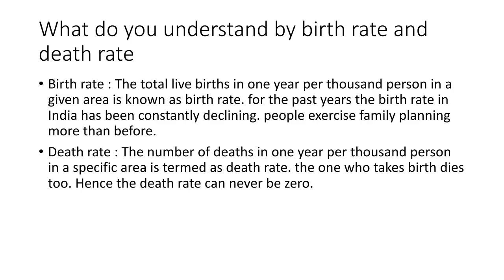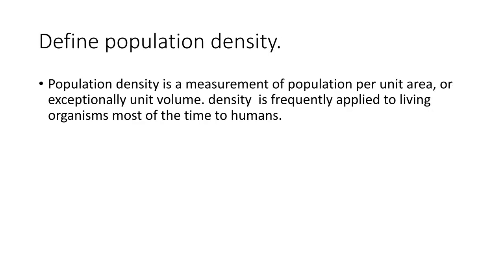Question number three: what do you understand by birth rate and death rate? First, birth rate — the total live births in one year per thousand persons in a given area is known as birth rate. For the past years, the birth rate in India has been constantly declining, and people exercise family planning more than before. Now, death rate — the number of deaths in one year per thousand persons in a specific area is termed as death rate. The death rate can never be zero.